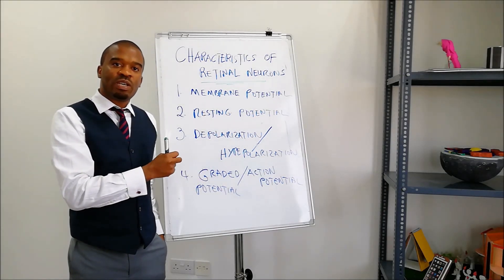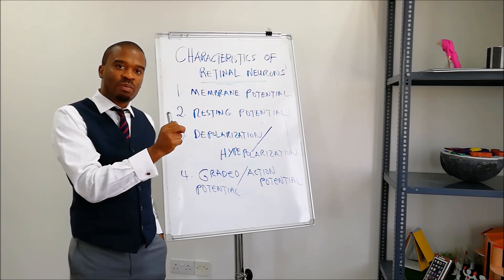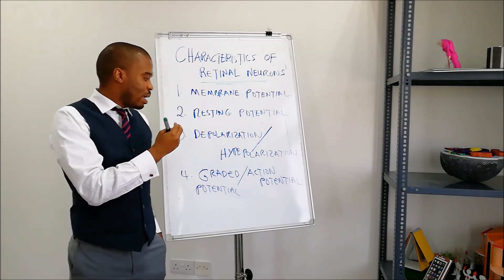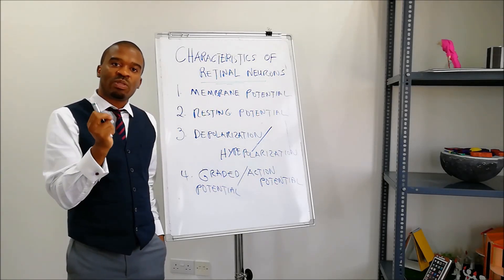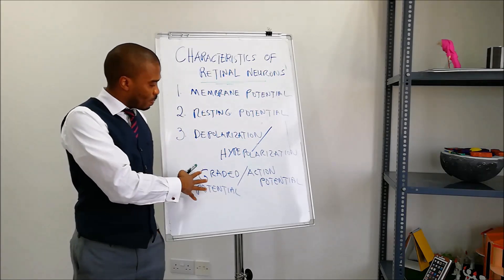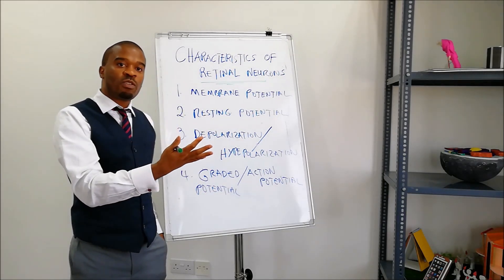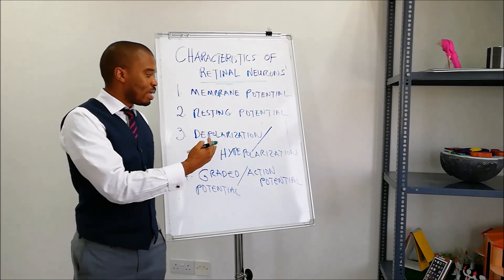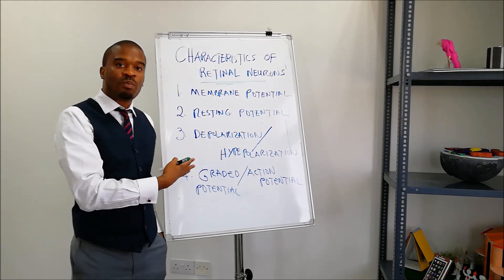Graded potential is a change in membrane potential that is dependent on the size of the stimulus, whereas action potential does not depend on the size of the stimulus. Graded potential travels shorter distances, whereas action potential travels longer distances. The cells that have graded potential include photoreceptor cells, bipolar cells, and horizontal cells, whereas ganglion cells and amacrine cells have changes in action potential.